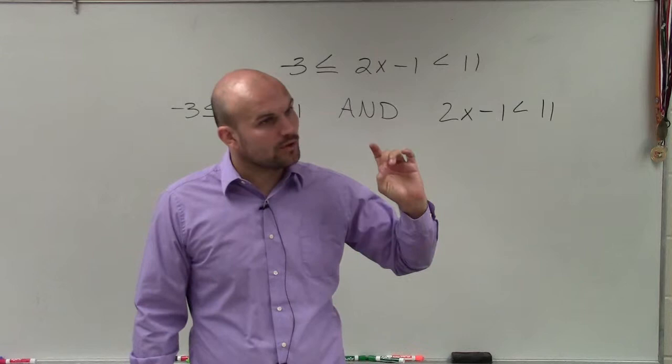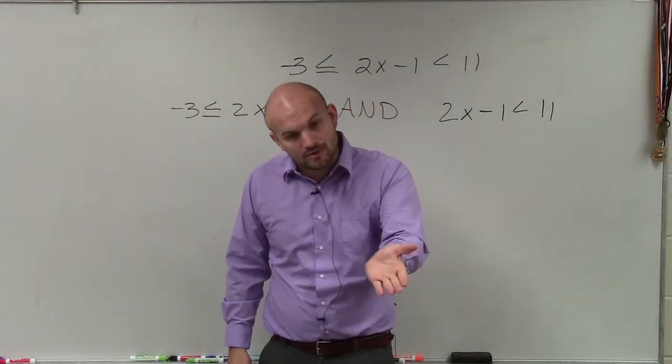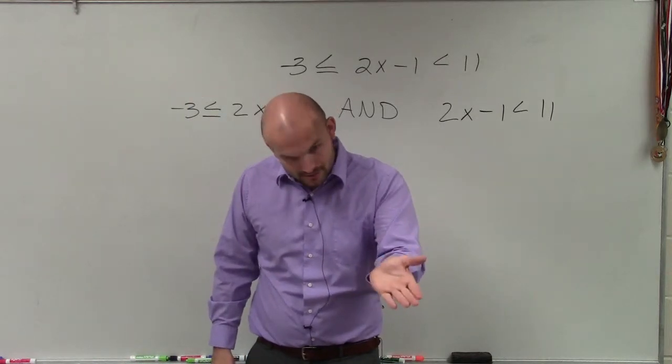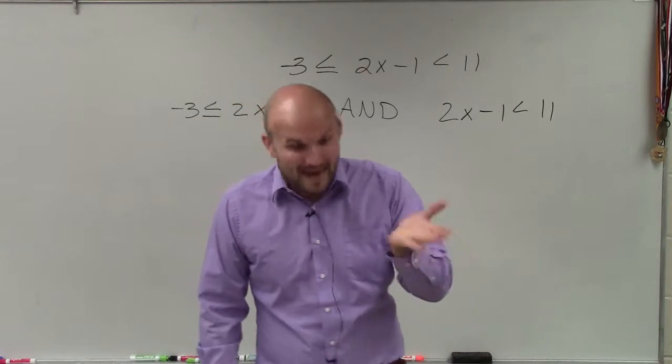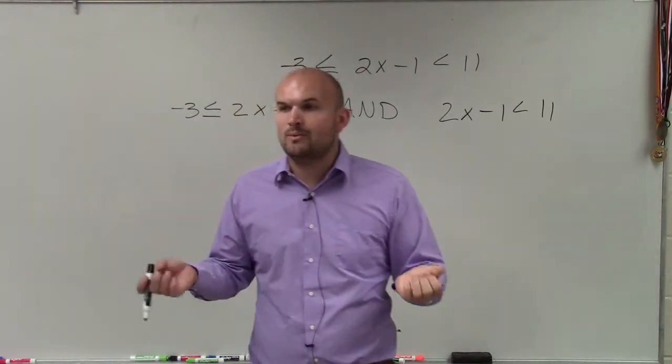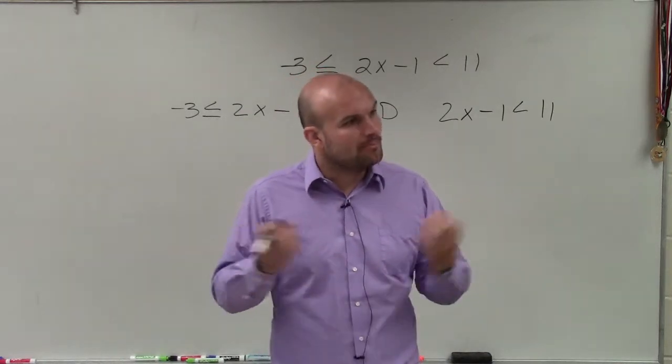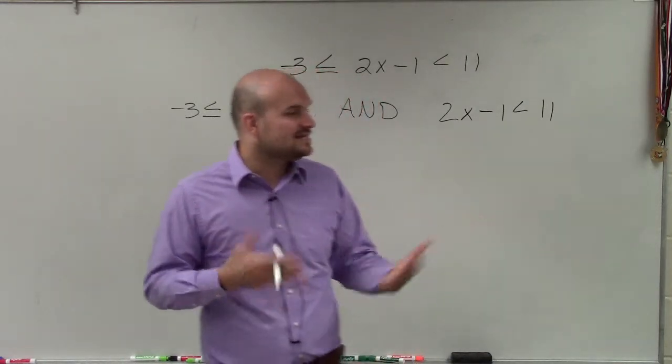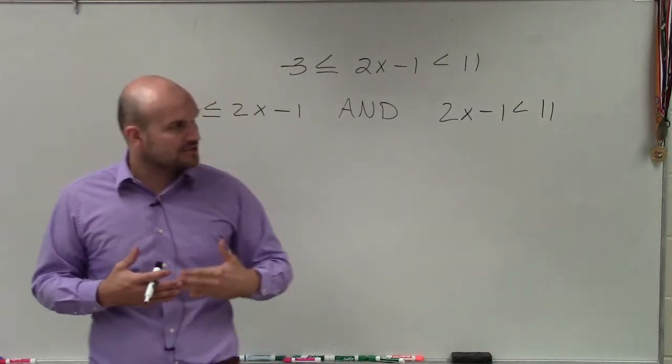The way that OR works, if I say if you OR your parent come to open house, I'll give you extra credit. So if you come to open house, do you get credit? Yes. If your parent comes to open house, do you get credit? Yes. If you AND your parent both come to open house? Yes. So OR is what we call inclusive - one or the other is true, or both. Where AND is only going to be true when both of them are true.